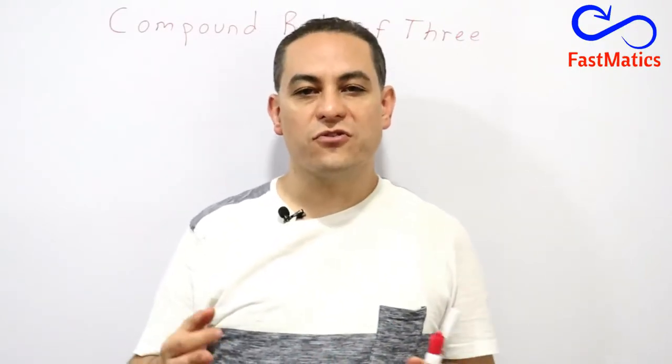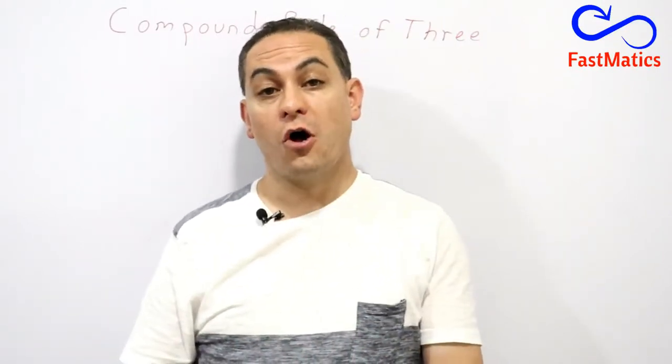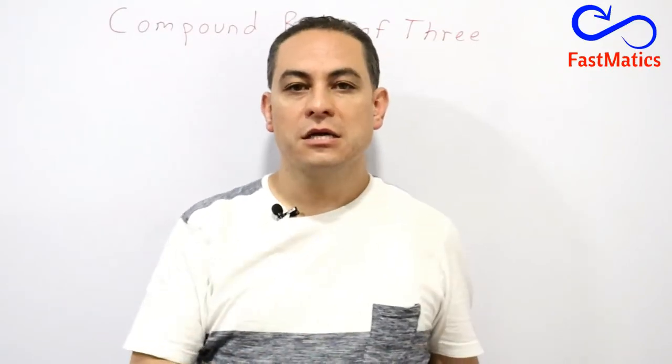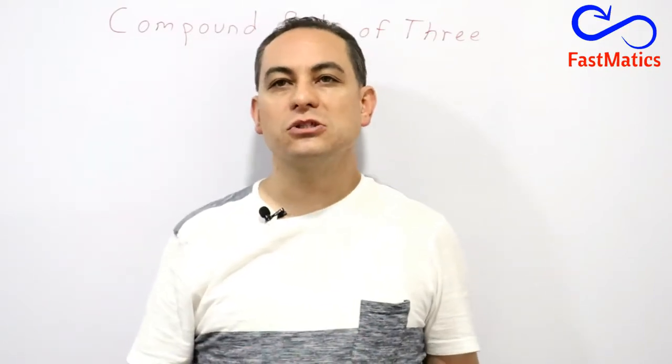What does that mean? When you have three or more magnitudes in a problem of rule of three, you need to use a method in order to solve it.